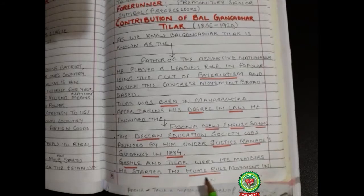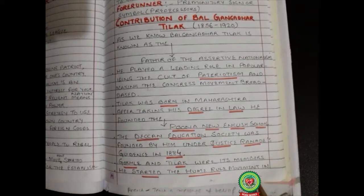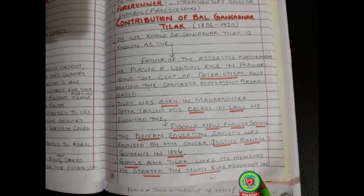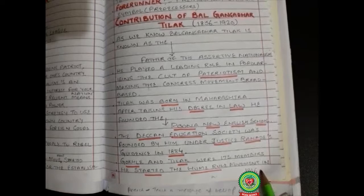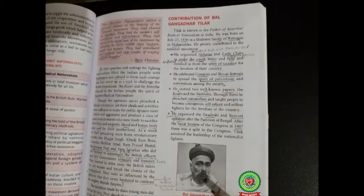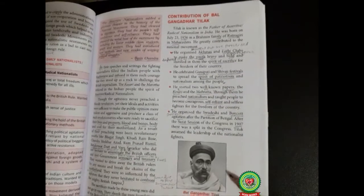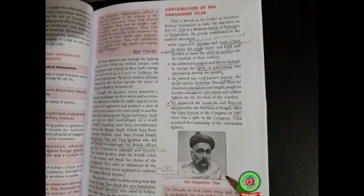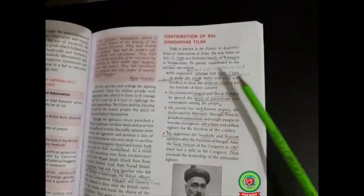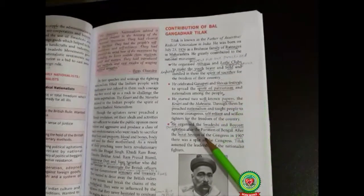He started the Home Rule Movement in 1916. Bal Gangadhar Tilak was known as the father of assertive radical nationalism in India.